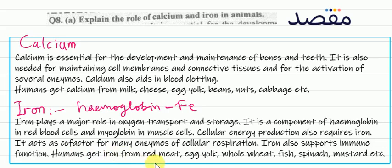Sources of iron include red meat, egg yolk, whole wheat, fish, spinach, and mustard. This was all about calcium and iron.